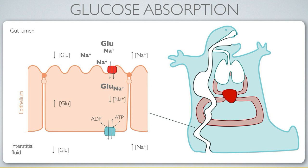Once we have the glucose molecule in the interior of the cell, we can make use of facilitated diffusion to allow it to traverse into the interstitial fluid.